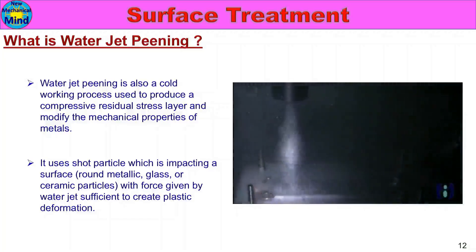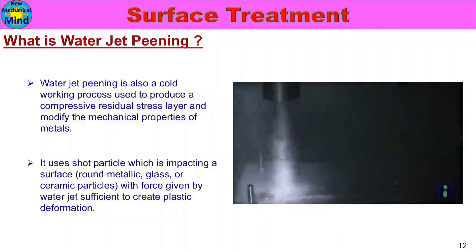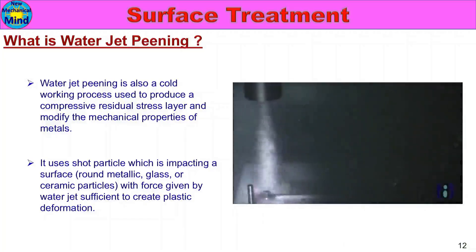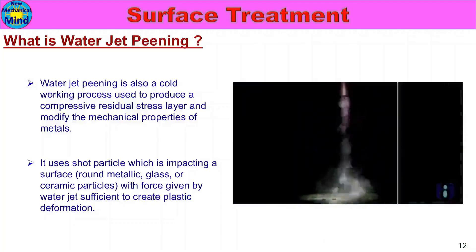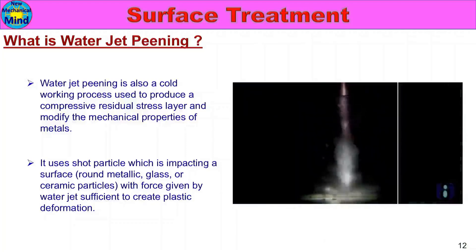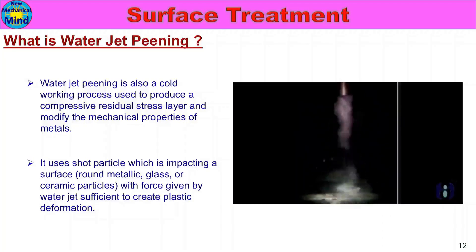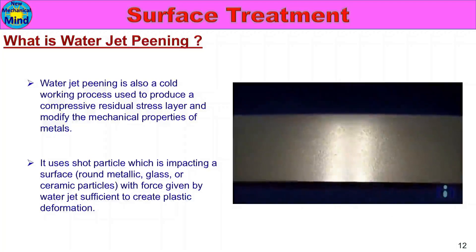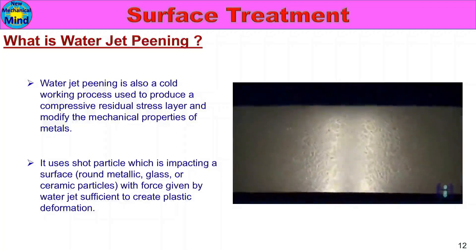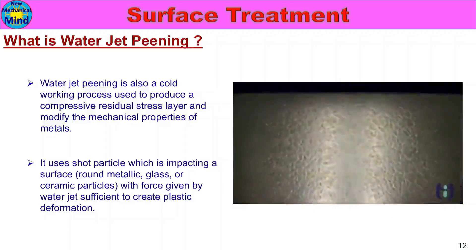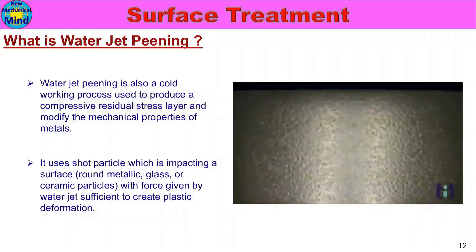In shot peening you spray particles through air, while in water jet peening the water provides the pressure on the surface. The round metallic particles create plastic deformation and increase compressive residual stress on the surface. This is water jet peening.